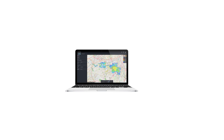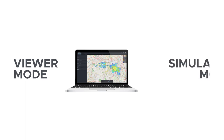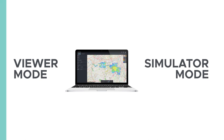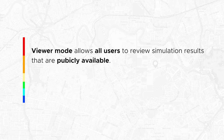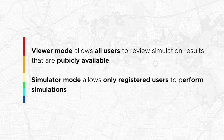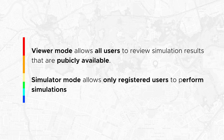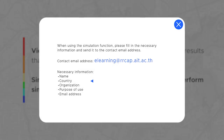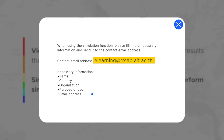Flood S is divided into two modes. The viewer mode allows the user to see the results of several simulations, while the simulator mode lets the user choose a location across the globe. Viewer mode allows all users to review publicly available simulation results, while simulator mode allows only registered users to perform simulations. All interested individuals are welcome to apply for an account by sending their name, country or address, affiliated organization, purpose of use, and email address to the service provider, AITRRCAP, at elearning@rrcap.ait.ac.th.